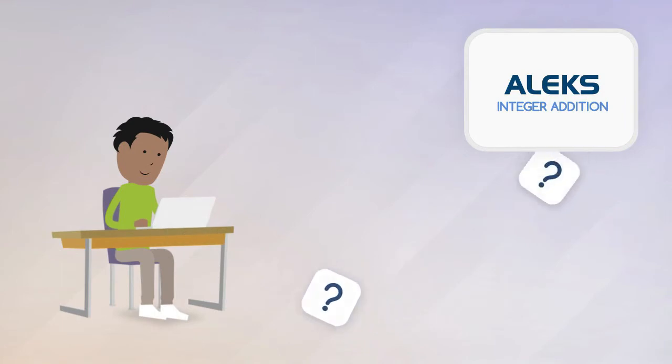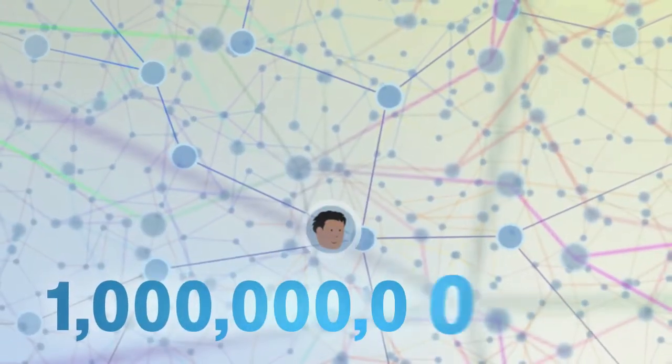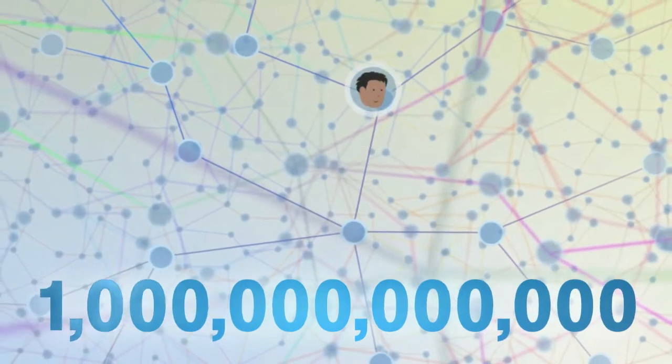ALEKS constantly watches Sam, and records his successes and failures. And this information is used to guide Sam along one of his optimal learning paths through the trillions of knowledge states in the learning space. Only ALEKS has that power.